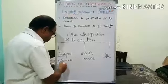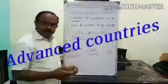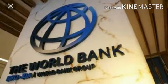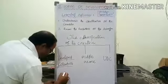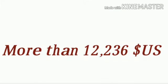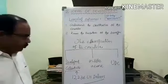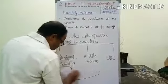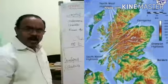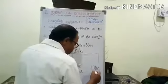Developed countries are also known as progressive countries, industrially developed countries, or advanced countries. According to the World Bank report, countries whose per capita income is more than 12,236 US dollars per annum are called developed countries. Examples include Canada, United States of America, and United Kingdom.